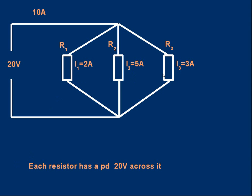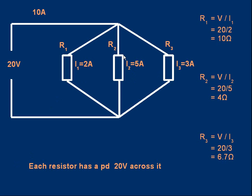Components in parallel each have the same voltage — the same potential difference — across them as all the others. I've added the actual resistance values; we can work them out because we have enough data. How big is R1? Well, R = V/I by definition, so to work out R1 we divide the voltage across it by the current through it: 20 volts divided by 2 amps gives 10 ohms.